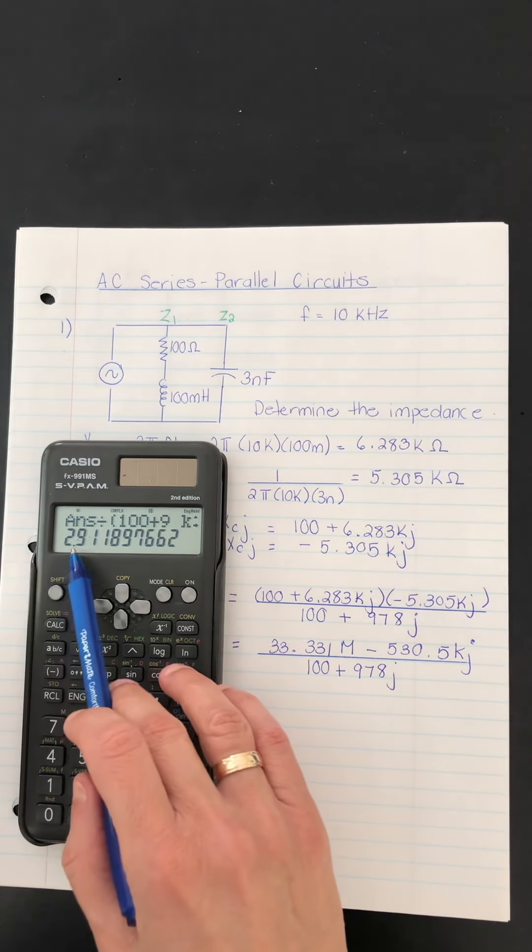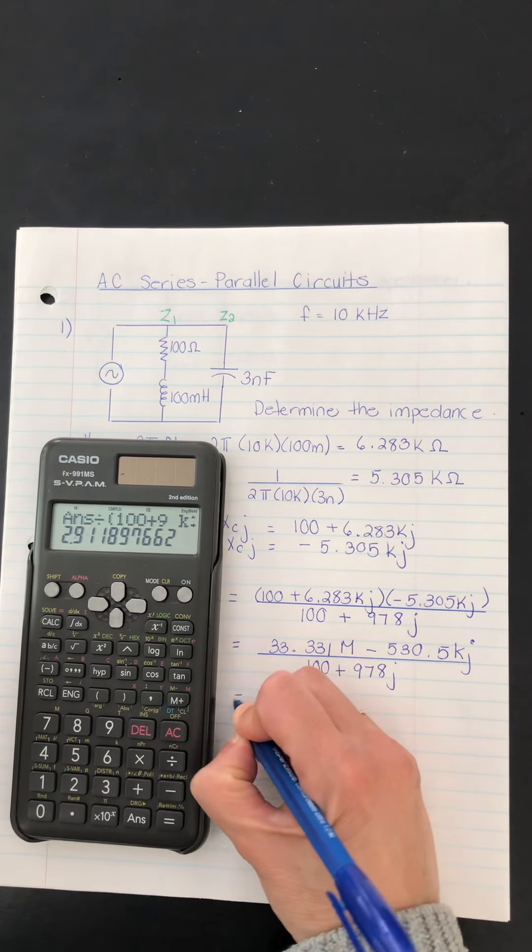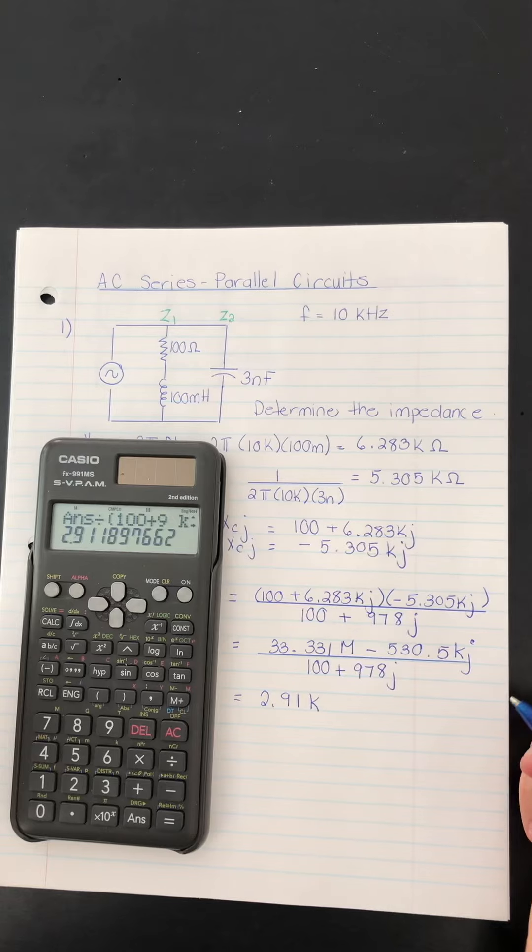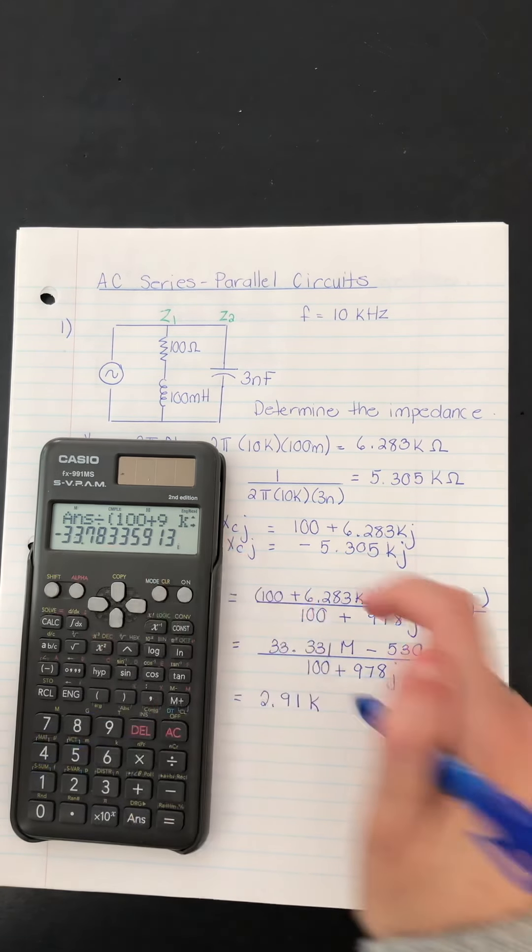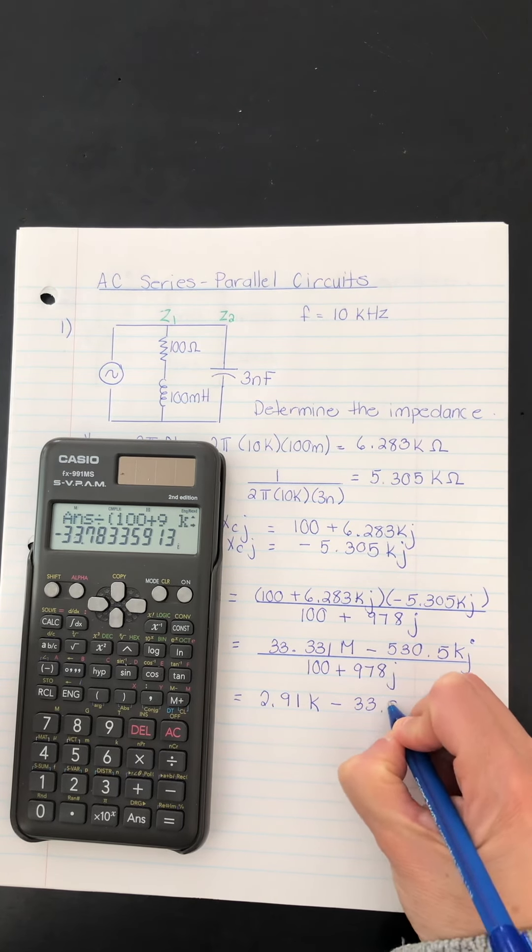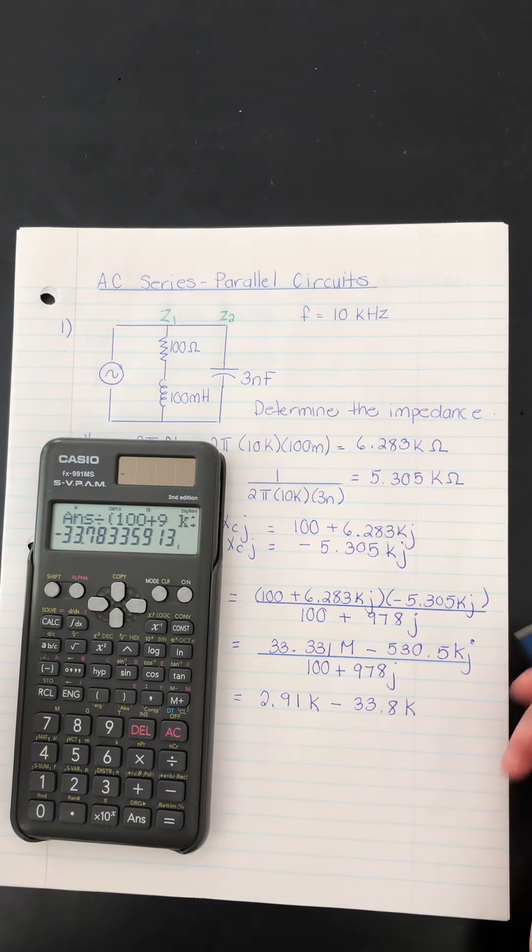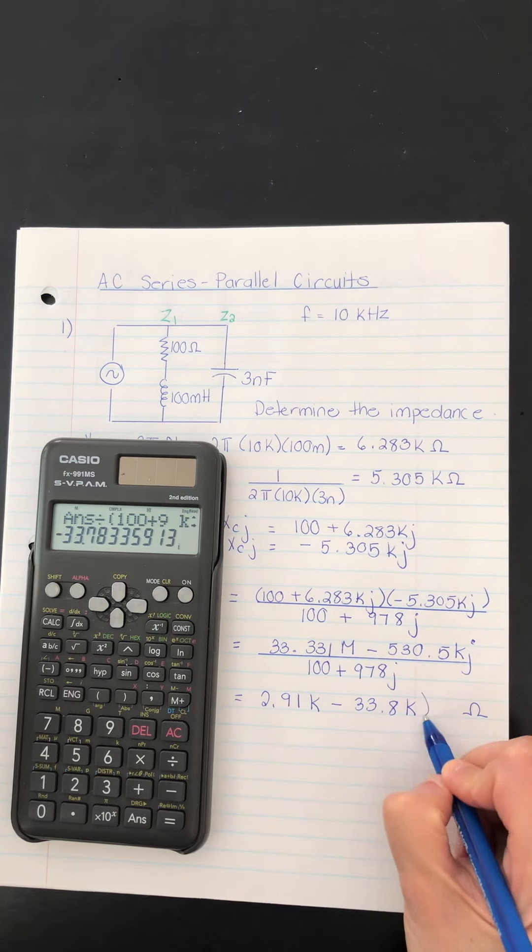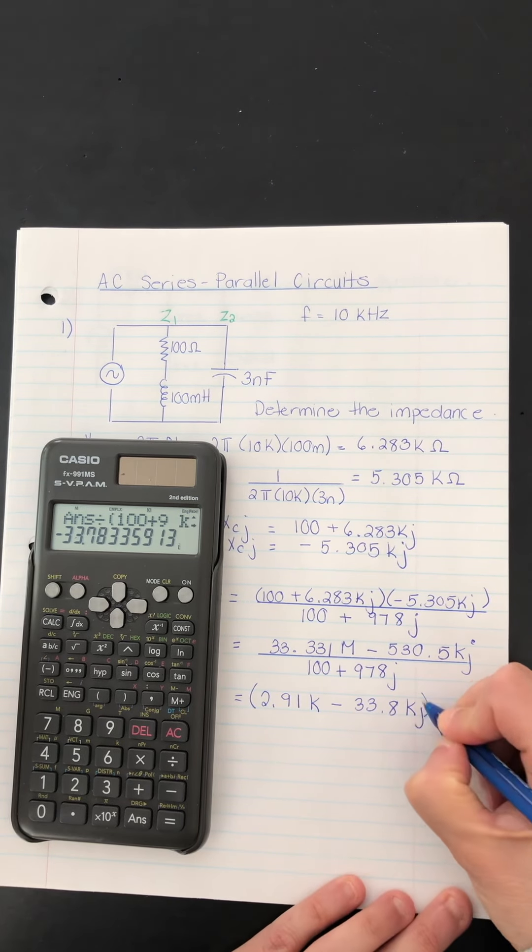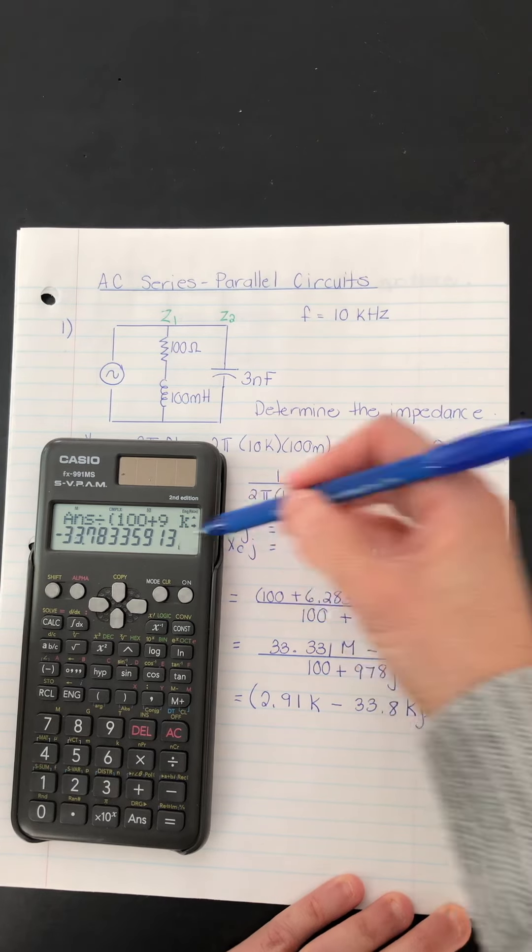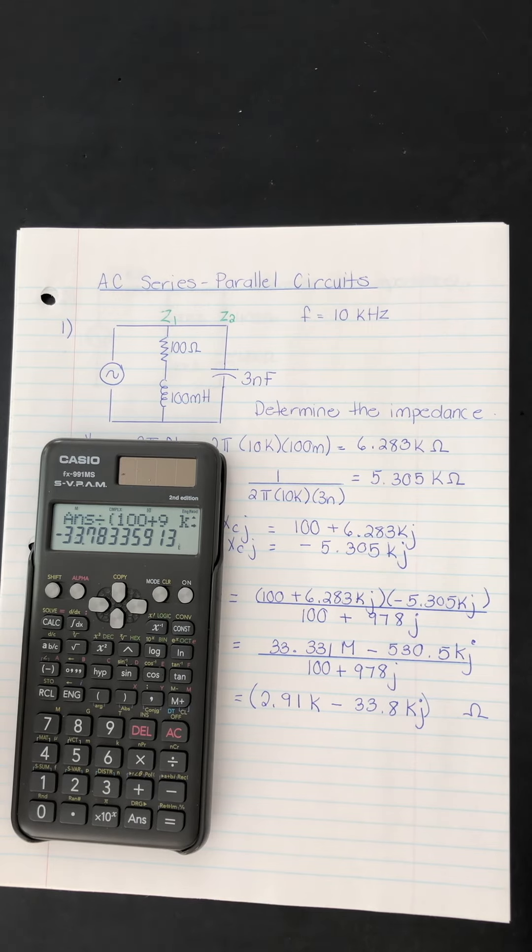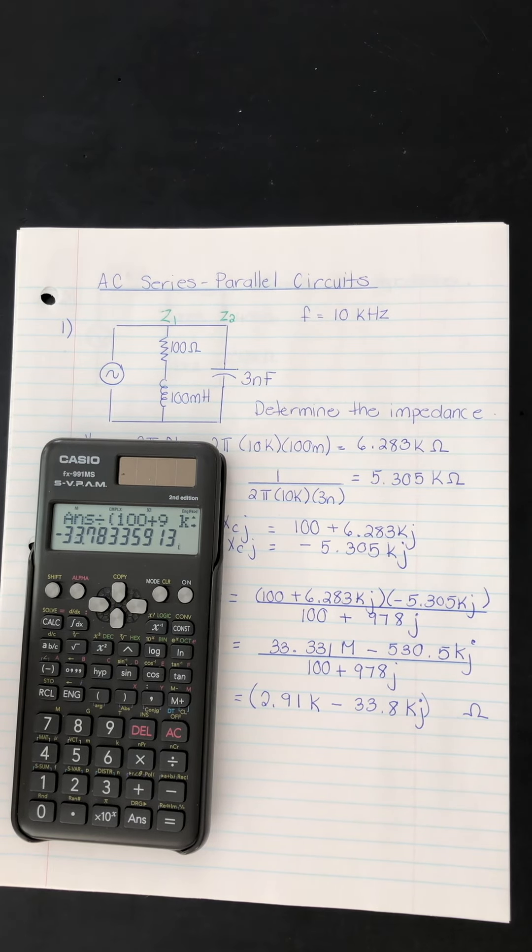And here we go. So I'm going to write this out. It is 2.91 kilo. Shift equals. Negative 33.8. That's also kilo. And this, of course, would be in ohms. We definitely need a J there to show that that's the imaginary part right there.